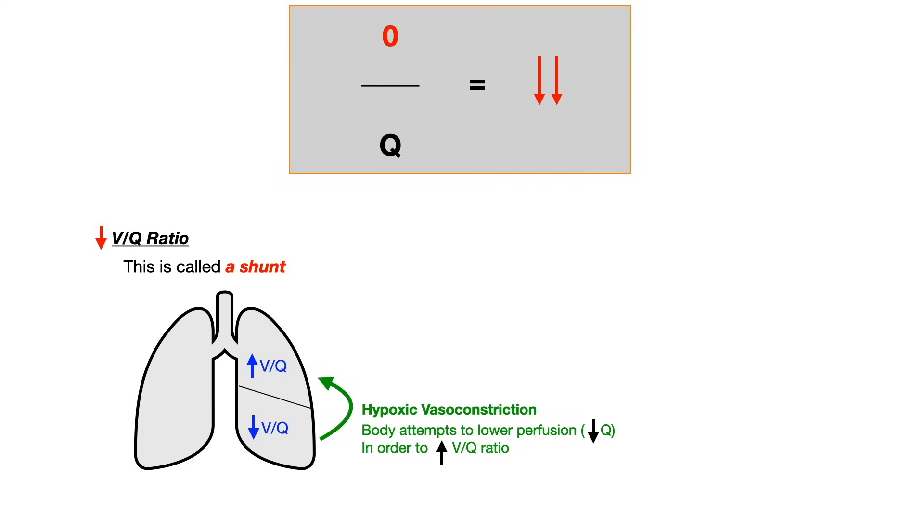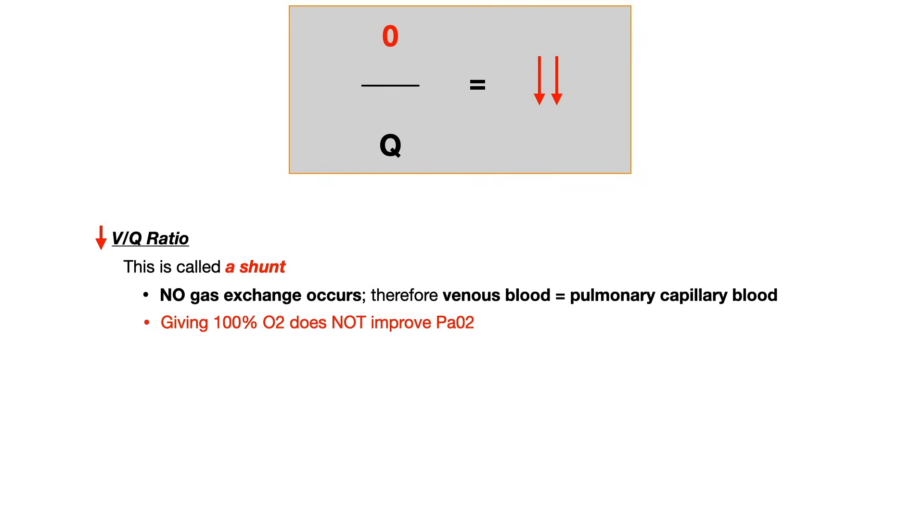Hypoxic vasoconstriction will occur. Now, because of this, no gas exchange is occurring and venous blood content is basically equal to pulmonary capillary blood. And what I need you to memorize, this is the most important point. So focus here. If you've been kind of just in the background, laying on your couch, looking at your phone, listening to me blabble on here, this is where it's time to focus. If you give a patient with a decreased VQ ratio, i.e. with a shunt, if you give that patient 100% oxygen, it does not improve the P little a O2 in a shunt.